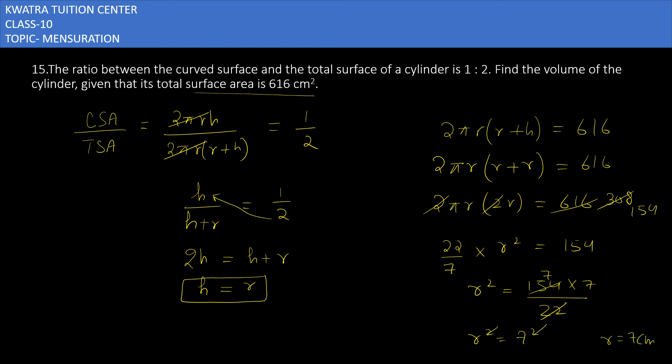Now what you have to find is volume. Volume is πr²h. So π as it is, 22 by 7, r square is 7 square, and h equals r, so it is 7.